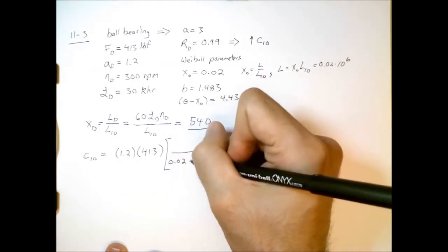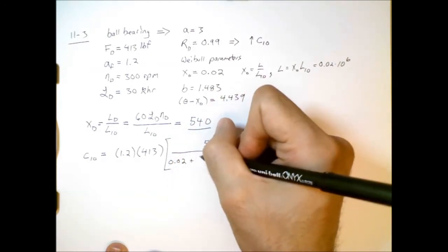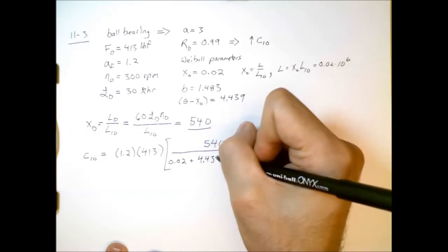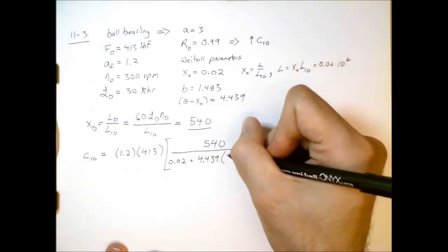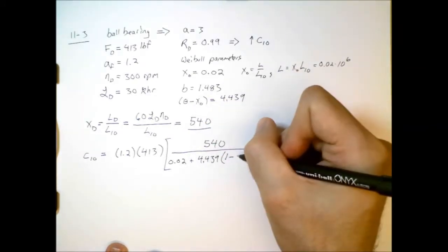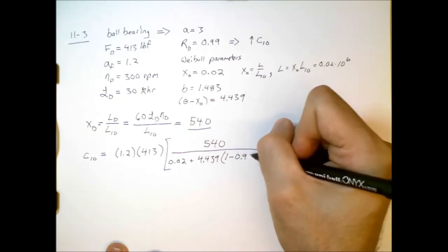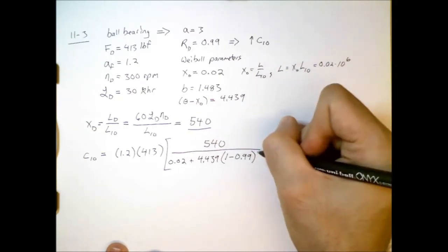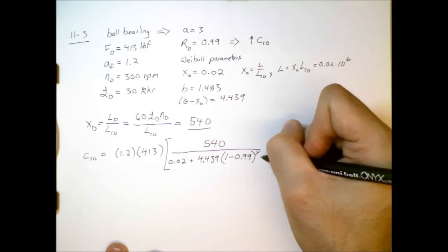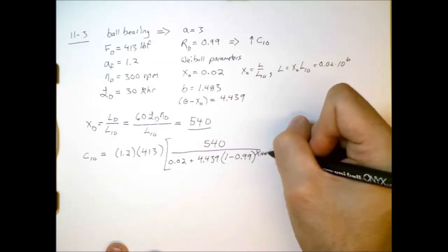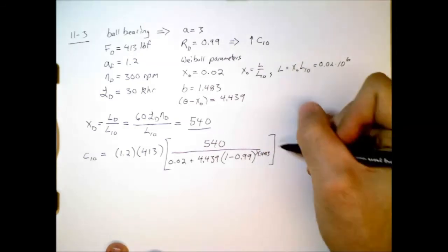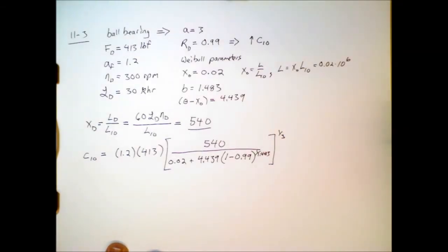Weibull parameter down here, 0.02 plus 4.439 times the probability of failure, which is 1 minus 0.99, all to the power of 1 divided by 1.483, and then that entire quantity raised to the power of one-third.